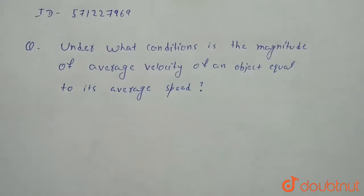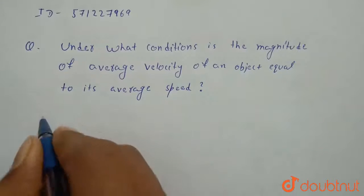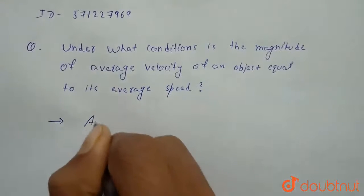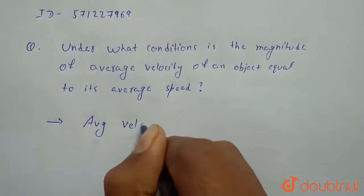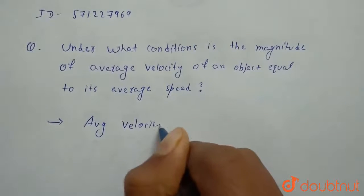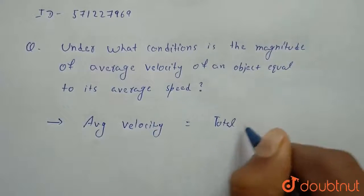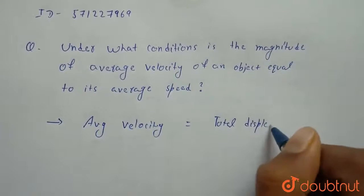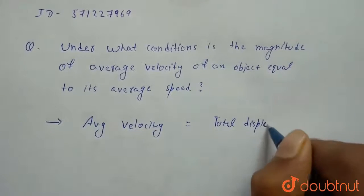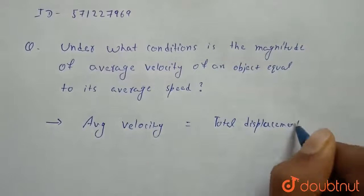First we will see what is average velocity and what is average speed. So average velocity is basically total displacement upon total time.